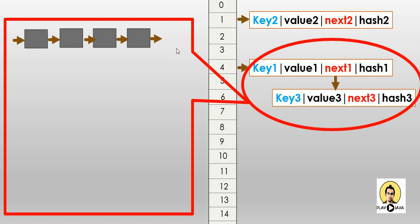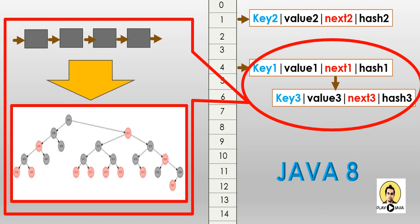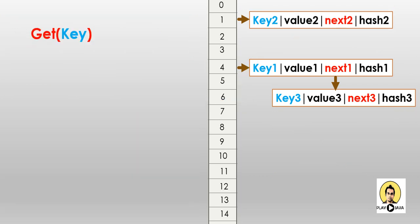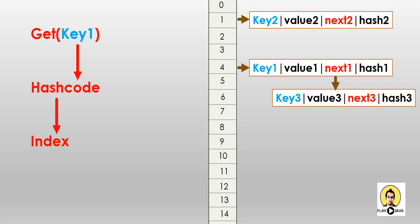In Java 8, when the linked list exceeds a certain threshold it gets transformed into a Red-Black Tree. This is the main change in Java 8 regarding the HashMap implementation. For the get method, we pass the key, and depending on the key the hash code is calculated. Based on the hash code, the bucket index is found and the pointer goes to that particular bucket, searching for the node whose value matches the key given by the user.